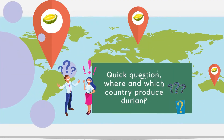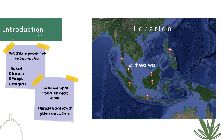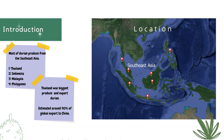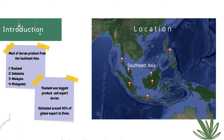Quick question: where and which country produces durian? Most of the durian is produced from Southeast Asia, such as Thailand, Indonesia, Malaysia, and the Philippines. Among these four countries, Thailand is the biggest producer and exporter of durian, estimating around 90% of global exports to China.